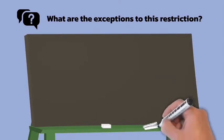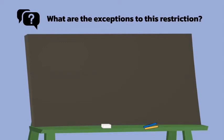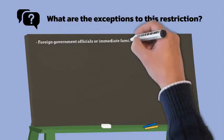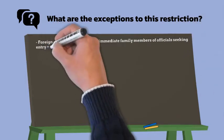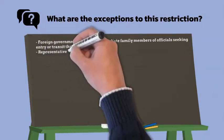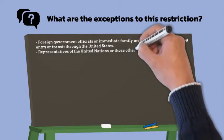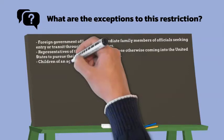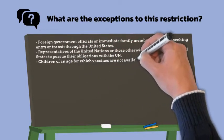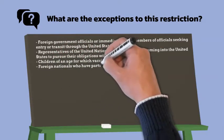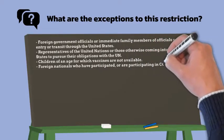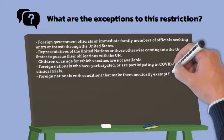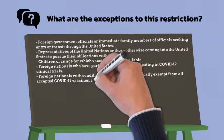However, upon entry, these individuals must follow special requirements. Foreign government officials or immediate family members of officials seeking entry or transit through the United States. Representatives of the United Nations or those otherwise coming into the United States to pursue their obligations with the UN. Children of an age for which vaccines are not available. Foreign nationals who have participated or are participating in COVID-19 clinical trials. Foreign nationals with conditions that make them medically exempt from all accepted COVID-19 vaccines, as determined by the CDC.